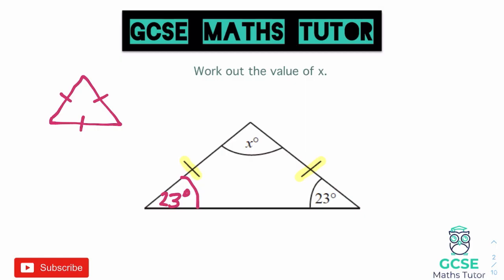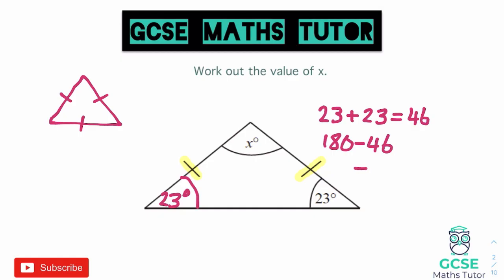Now we've got those two base angles, we can figure out the top angle using the fact that angles in a triangle add up to 180. If we add together 23 and 23, that's 46. To find the missing angle, we do 180 take away 46, which leaves us with 134 degrees. Just check that adds up to 180: 46 plus 134 equals 180. So X is equal to 134 degrees. We could also have an exterior angle on the end of an isosceles triangle, and those are the types of questions to practice.